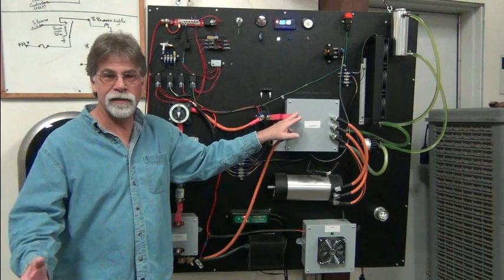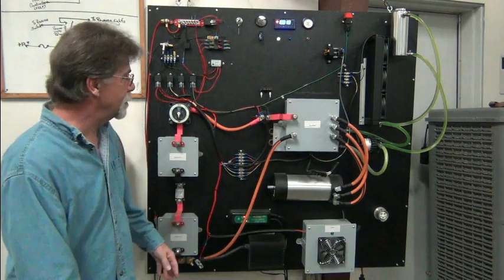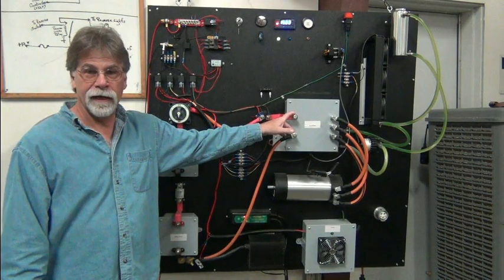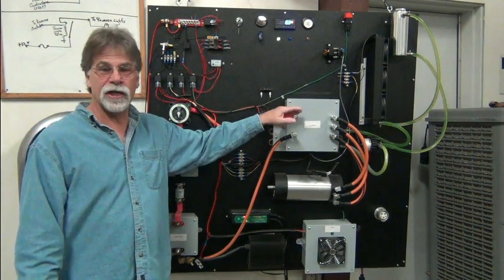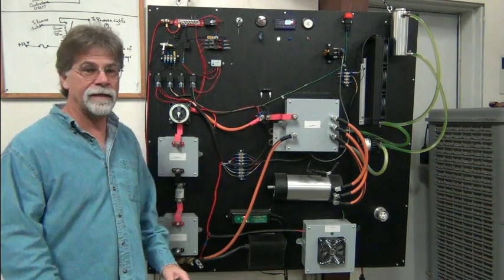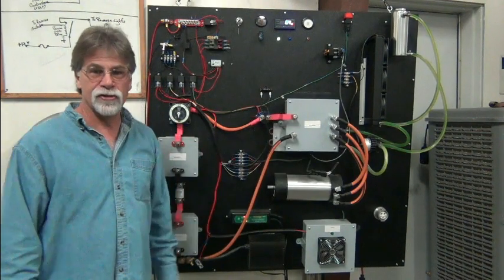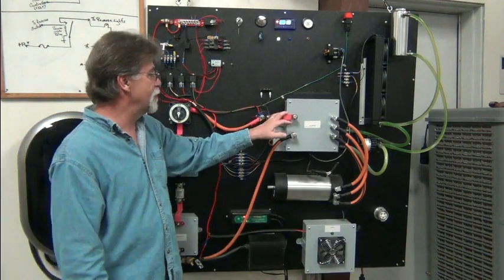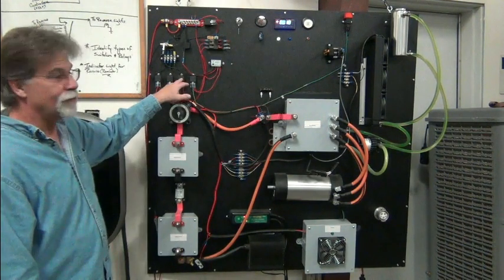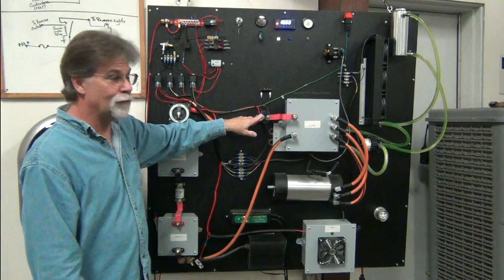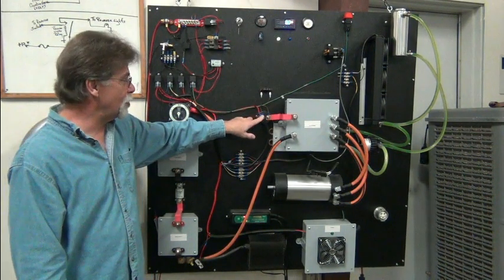And so that's allowing these capacitors in here to charge at a nice rate. We don't have this high inrush current, and it pre-charges those capacitors. As soon as those capacitors are charged, the controller will turn off this relay. And then once that is accomplished, it will turn on this contactor.